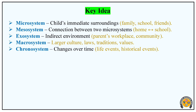Let's recap all five systems. The Micro System is the immediate surrounding — family, school, friends. The Meso System covers connections between two micro systems. The Exo System is the indirect environment — parents' workplace and community. The Macro System is large culture, traditions, values, and society. The Chrono System is change over time — life events and historical events.